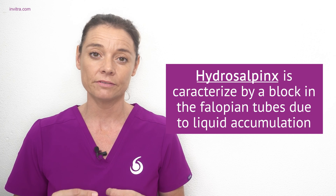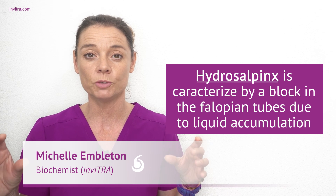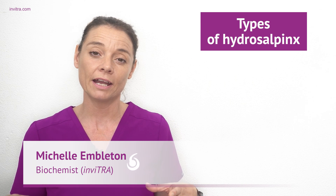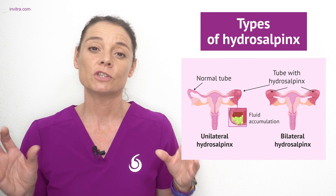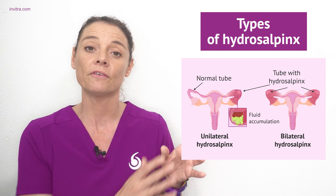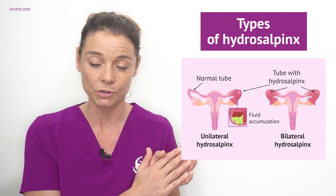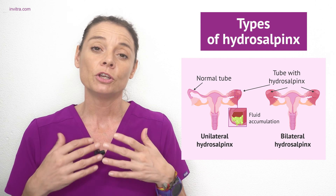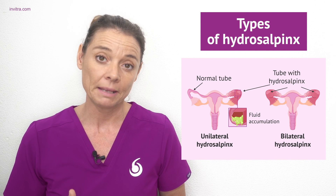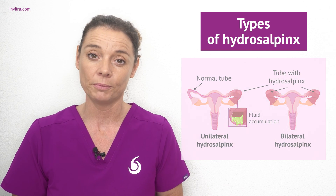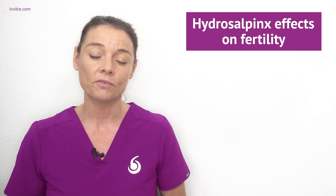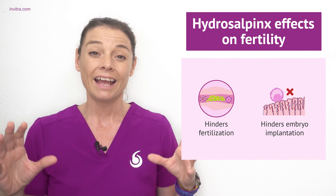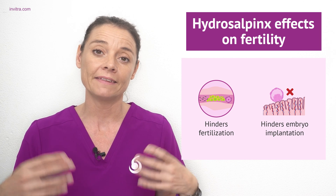Hydrosalpinx is characterized by a blockage in the fallopian tubes due to liquid accumulating in them. In the female reproductive system we have two fallopian tubes, so a hydrosalpinx can be either unilateral, where it affects only one of the fallopian tubes, or bilateral, where it affects both. Usually when hydrosalpinx is present it is bilateral. The presence of liquid in the distal part of the fallopian tubes causes the tubes to swell and prevents the passage of the sperm and the egg.